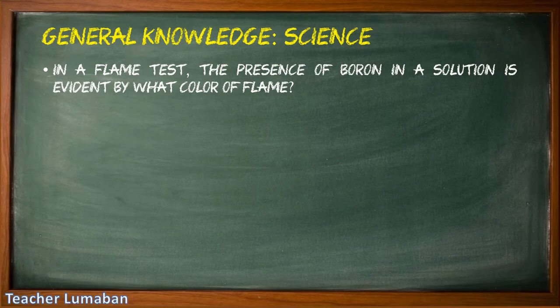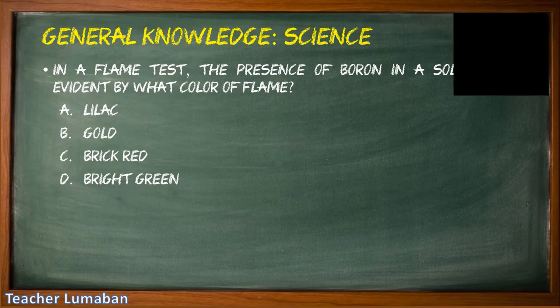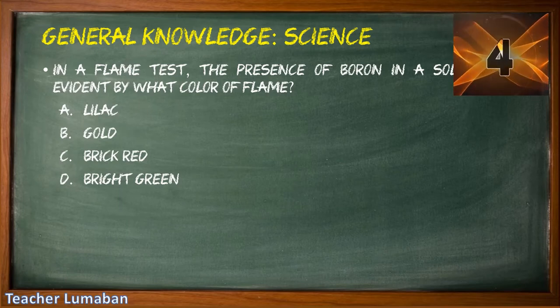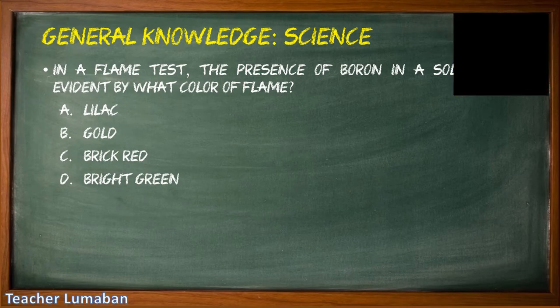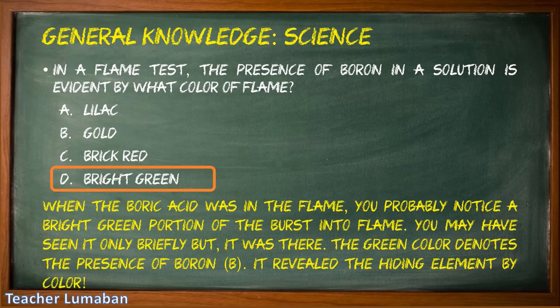In a flame test, the presence of boron in a solution is evident by what color of flame? Letter A: lilac, Letter B: gold, Letter C: brick red, Letter D: bright green. The correct answer is Letter D: bright green. The presence of boron in a solution is evident in the color of a bright green flame. When boric acid is in the flame, you can notice a bright green portion. The green color denotes the presence of boron (B), revealing the hiding element by color.